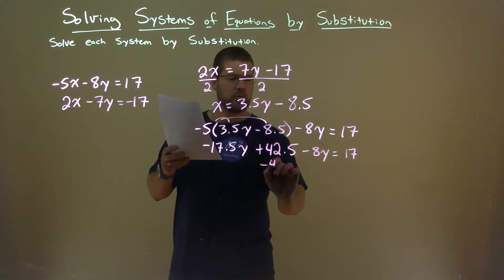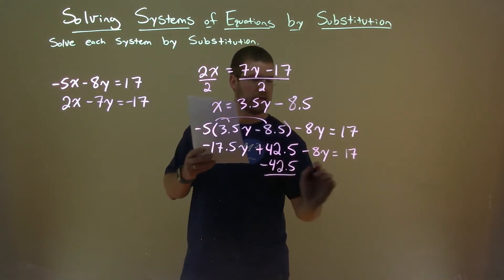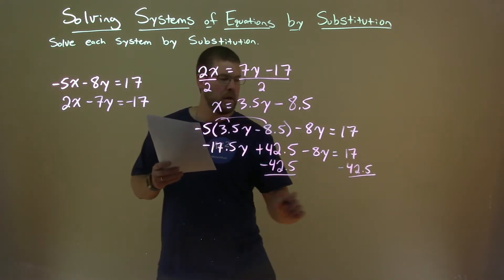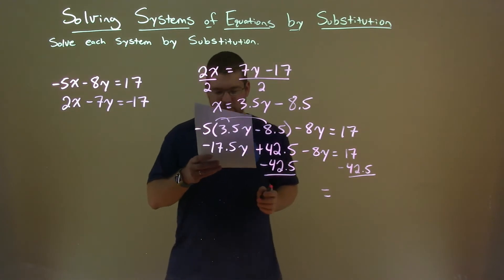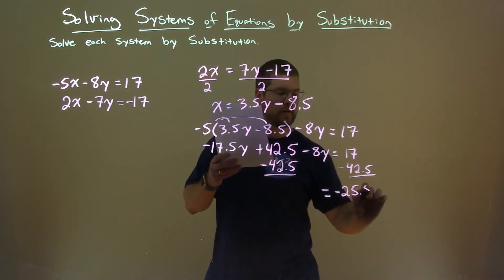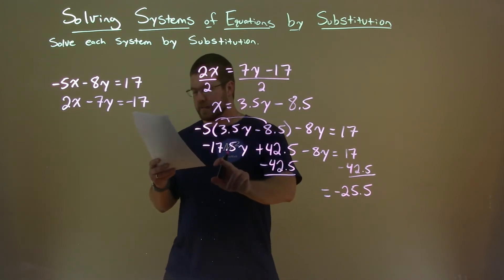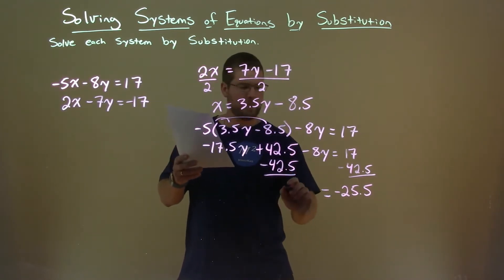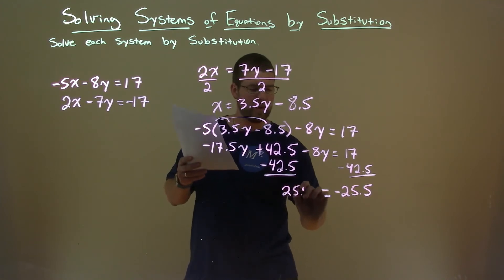-8y = 17. I'm going to subtract 42.5 to both sides. Let's get our like terms together. And we're left with, on the right-hand side, 17 - 42.5, which is -25.5. -17.5y - 8.5y is positive 25.5y. Divide both sides by 25.5.